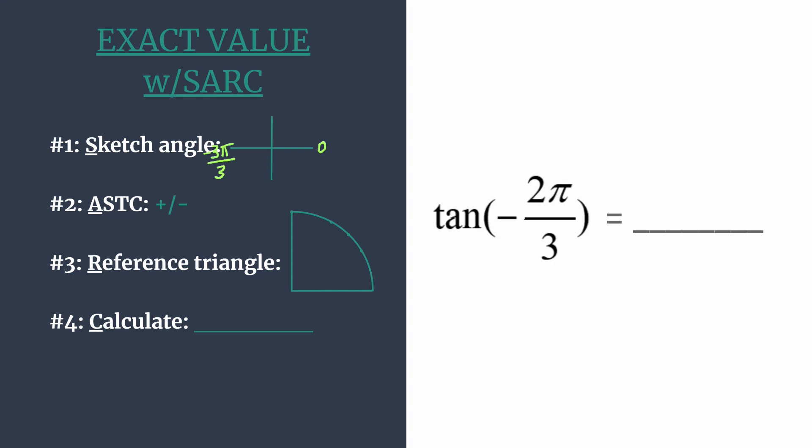That way we have a common denominator with our angle that we're trying to find an exact value for, and it becomes easier to see—here would be negative π over 3, and so here our angle is negative 2π over 3. It's in the third quadrant.